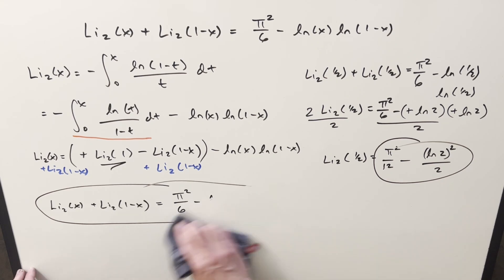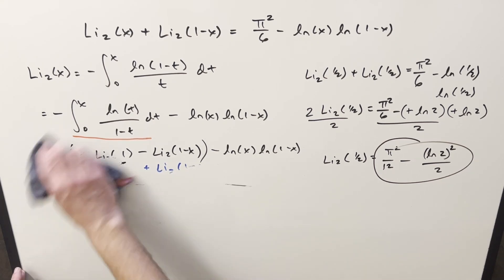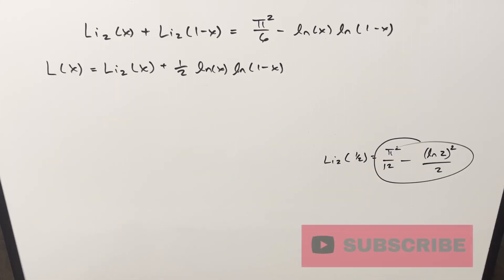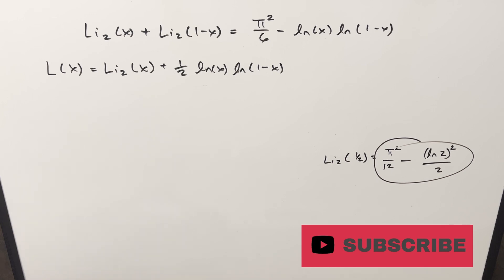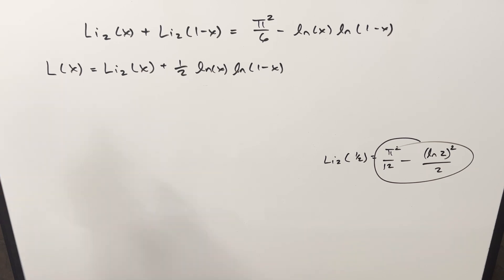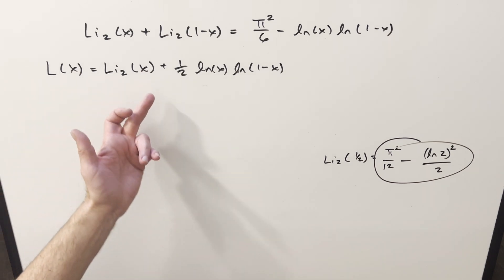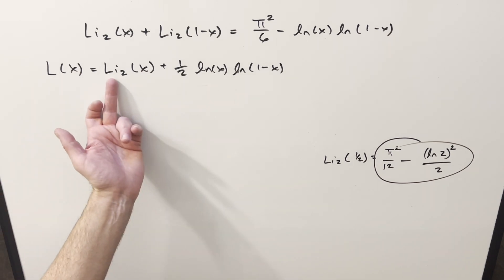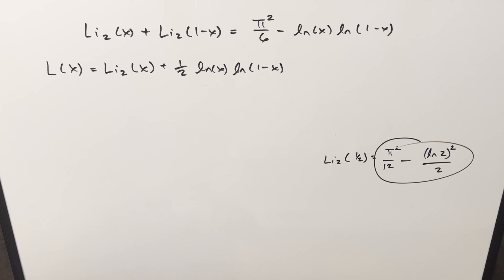Let me clean up the board and look at one more thing. We now have this L-function, which I've seen defined a few different ways — sometimes called the Rogers L-function. The interesting thing is we complicate the definition a bit by adding some extra terms to our dilogarithm, but then the resulting identities tend to be cleaner and simpler.